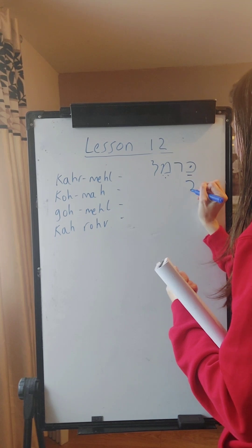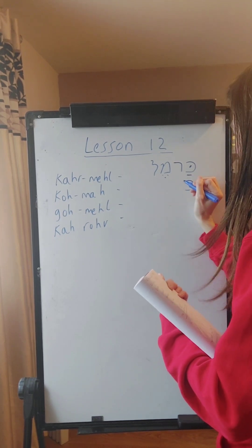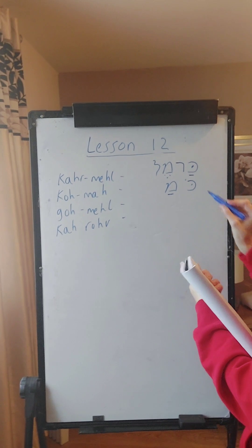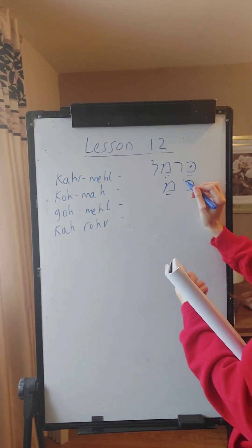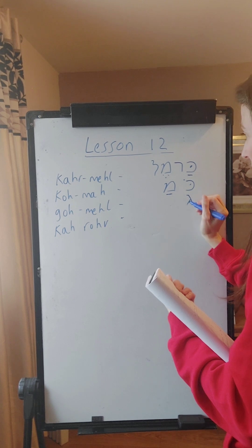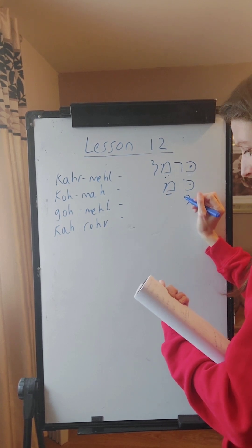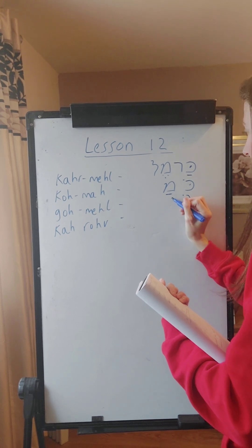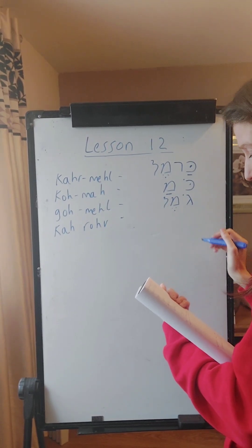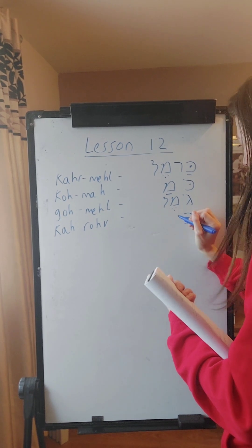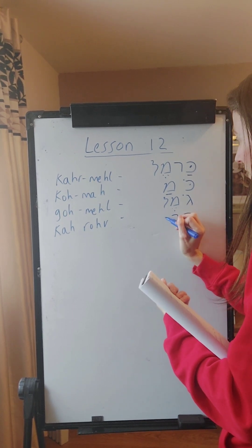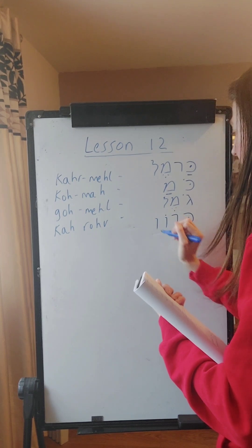So for korma, we put the K, the dot to the left of the letter for the O vowel, and then the Mem, the A. Koma. And for kharov, again use the Kaf, A vowel underneath, for the R sound R, O, B. Kharov.